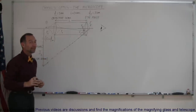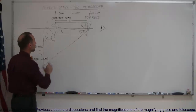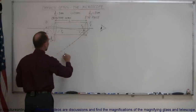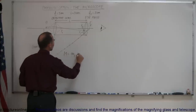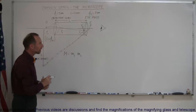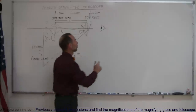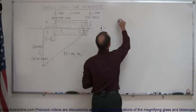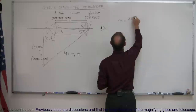Now how do we find the magnification of this microscope? We have two lenses, so the total magnification is simply the product of the magnification of the first lens times the magnification of the second lens. Since the second lens acts like a magnifying glass, let's tackle that one first.